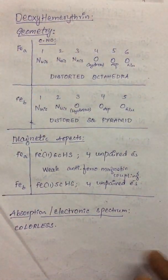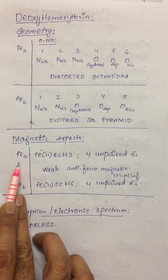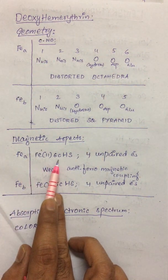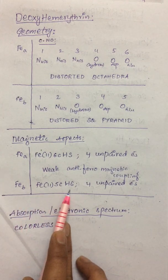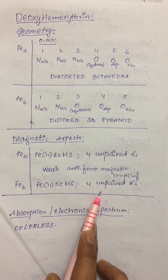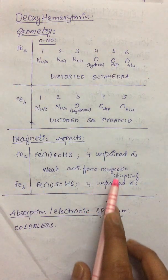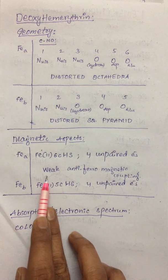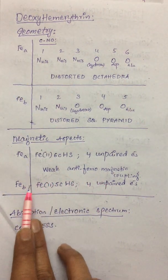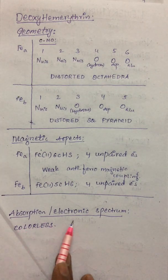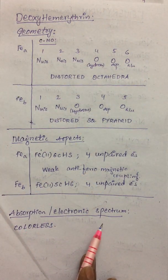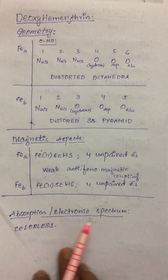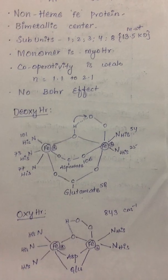Regarding magnetic aspects of deoxyhemerythrin: each iron is in the +2 oxidation state. Iron A is six-coordinated high spin, and iron B is five-coordinated high spin, with four unpaired electrons in each iron. However, the expected paramagnetic moment from deoxyhemerythrin is not observed due to weak antiferromagnetic coupling between the two iron centers. In the electronic absorption spectrum, no bands are found and deoxyhemerythrin is colorless.